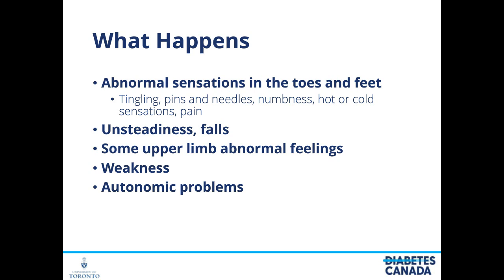People can also lose their balance and become unsteady on their feet when walking. This unsteadiness can lead to falls and injury. When the symptoms are in the feet and come up to a certain level, the hands often become involved after that, with the same kinds of abnormal sensations. A lot of people complain of weakness, and with long-standing, severe neuropathy, you will get weakness in the toes, feet, and ankles, progressing upward.